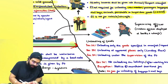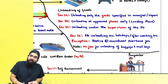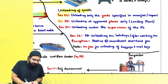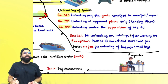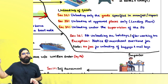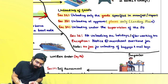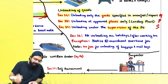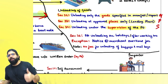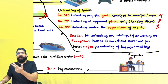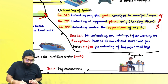Once you have got the entry inward, unloading will start. Sections 32, 33, and 34 say unloading should happen only of those goods specified in the import manifest or import report, at approved places, and under the supervision of the proper officer.